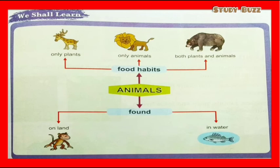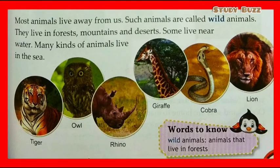Let's start the chapter. We shall learn about animals, their food habits, and where animals are found. In food habits, we will read that some animals eat only plants, some eat only animals, and some animals eat both plants and animals. In the topic of habitat, we will read that some animals are found on land and some are found in water.